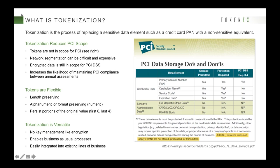Even if you're encrypting data — and this is not an argument against encryption — encrypted data is still in scope for the PCI DSS if you have the ability to decrypt that data. Even if you have access to the keys within the environment — for example, if encryption keys are stored in a stored procedure — that still brings those elements back into scope.